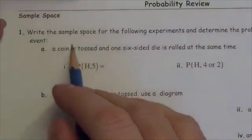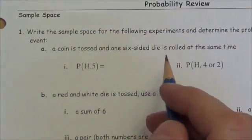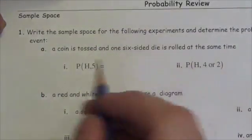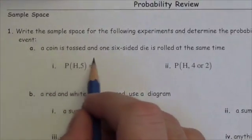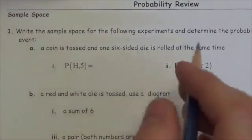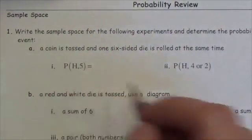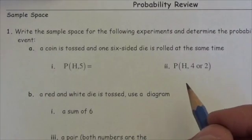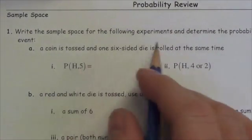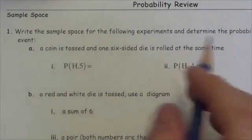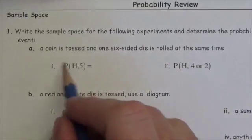The question says: write the sample space for the following experiments and determine the probability of the required event. A coin is tossed and one six-sided die is rolled at the same time, so we're going to figure out the sample space and then the probability.